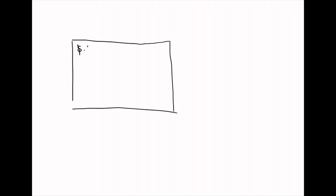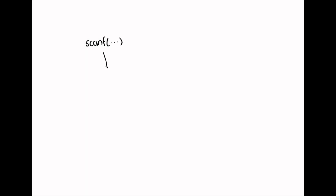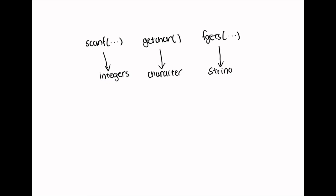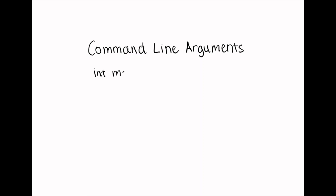Prior to watching this video, you may have learnt how to retrieve user input from the terminal using functions such as scanf for integers, getchar for a character, and fgets for strings. These are all ways for getting user input when the program runs. Now in this video, we will learn about another way to retrieve input for a program, specifically via what we call command line arguments.